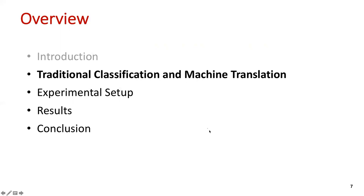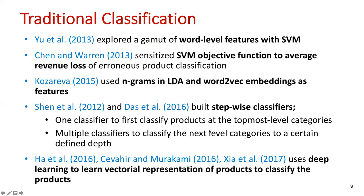Moving on to the literature review. Before the deep learning tsunami in natural language processing, support vector machine was the state-of-art classification method. Yu et al. explored different word-level features with SVM. Chen and Warren had interesting work injecting business sense into the model, forcing the SVM objective function to converge towards minimizing average revenue loss based on predicted categories — a wrongly classified low-revenue product costs less than one generating higher revenue.